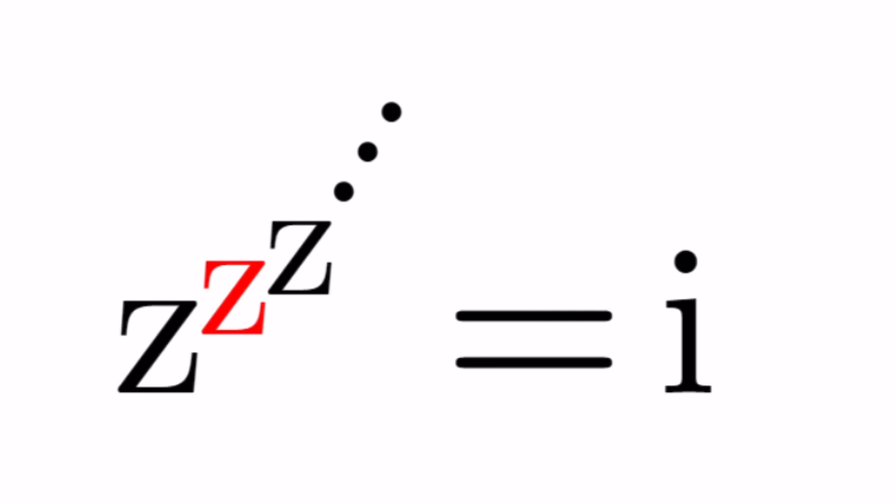We have z to the power z to the power z to the power z dot dot dot so on and so forth. It goes on forever, equals i. And we're going to be solving for z values.